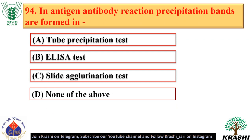Question number 94. In antigen-antibody reaction, precipitation bands are formed in the tube precipitation test — option A.